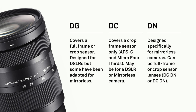Also worth noting: DG lenses will also go on crop sensor cameras, so a DG DN designed for an A7 will also go on an A6500. When you look at one of our products, it gives you the focal length, maximum aperture, and then suffixes — and those suffixes tell you the product characteristics so you can work out whether it suits your needs.